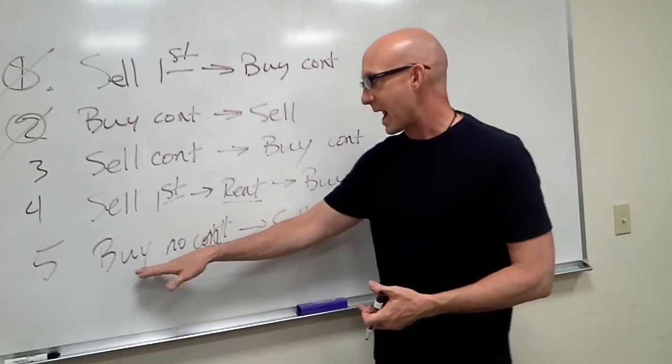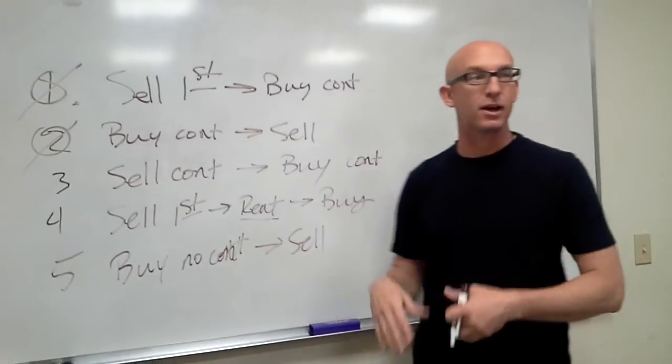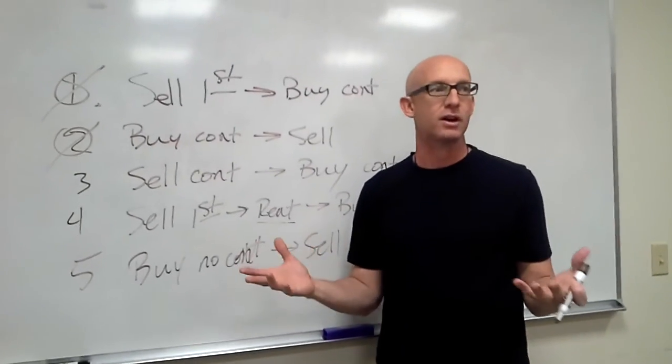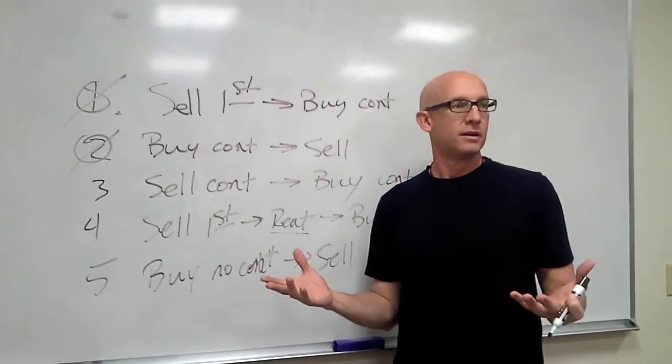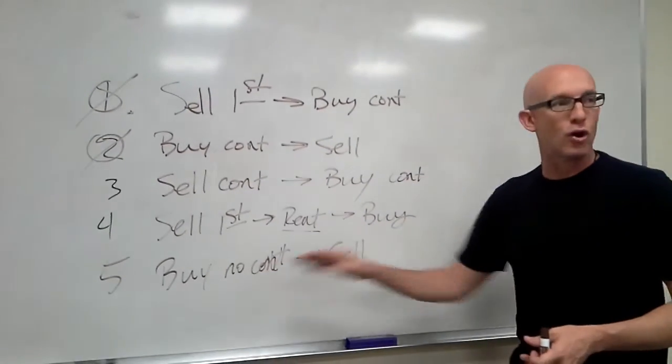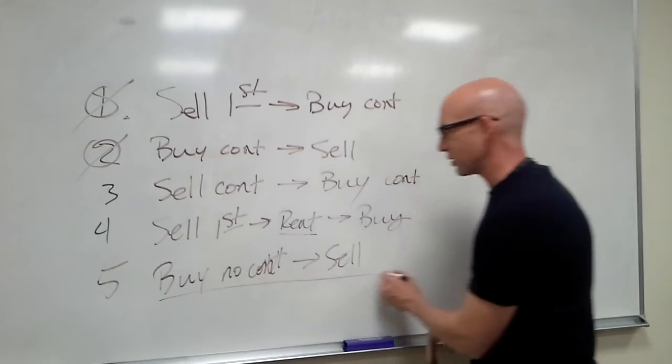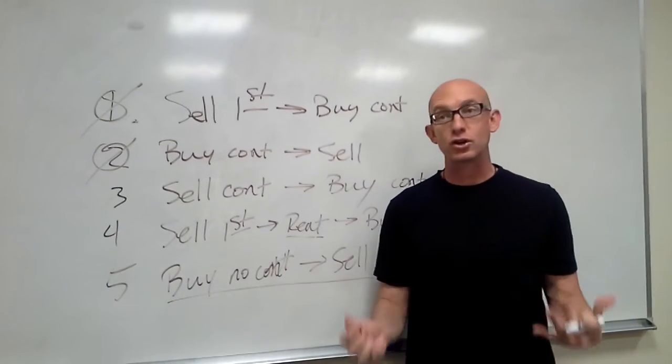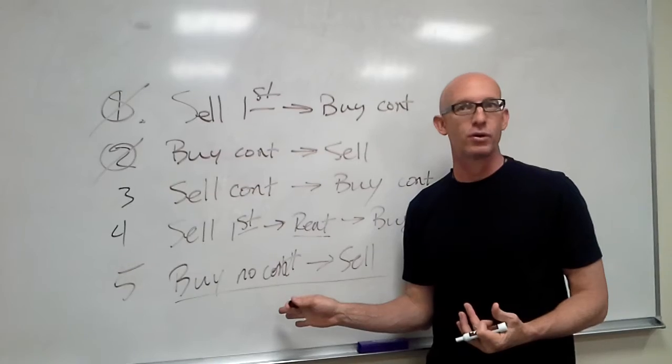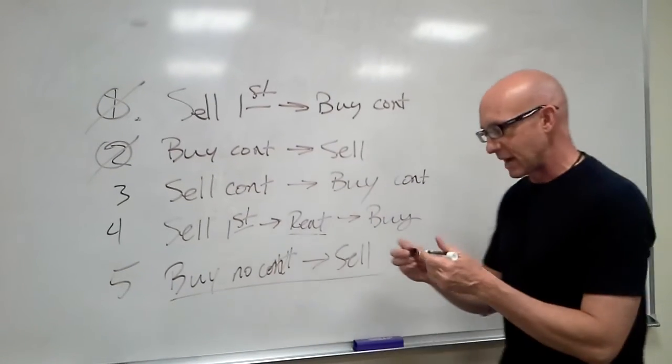And then the last one is to buy with no contingency and then sell. What's the issue there? We've got to have money. You've got to have money. You've got to be able to own two homes at one time. One way or another. But this one right here actually gives them the most security. You just have to be able to afford to make it happen.